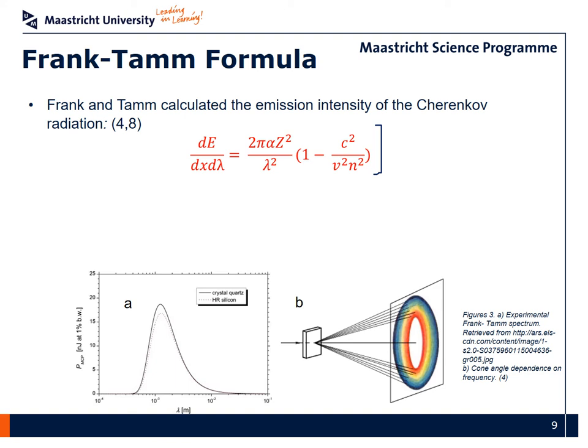In this expression we find α, that is the fine structure constant, and it is approximately 1 divided by 137. We have z, which is the charge of the particle, for an electron is 1, for example. We have the wavelength of the current Cherenkov radiation that is being emitted. We have then the c, the velocity of light, v, the velocity of the particle, and then the refractive index of the medium.